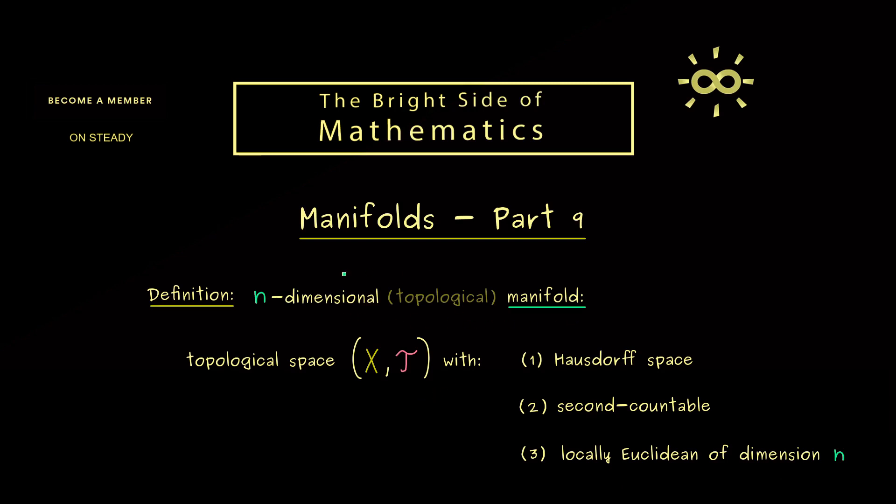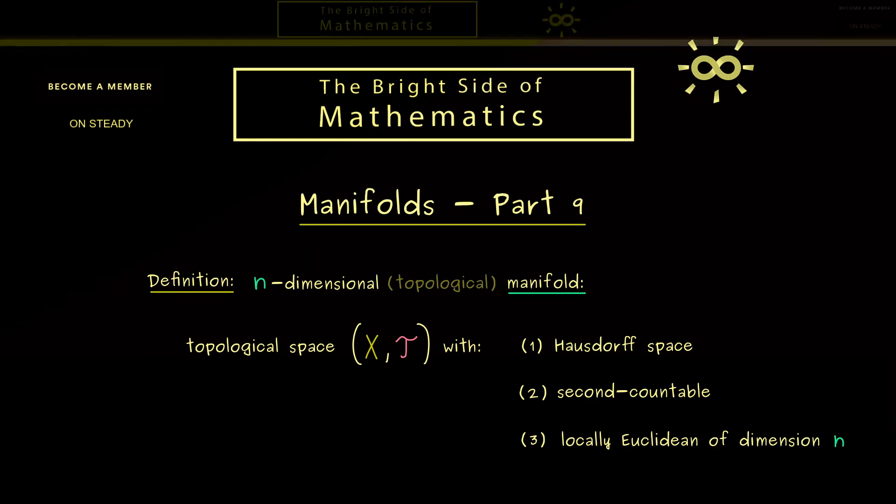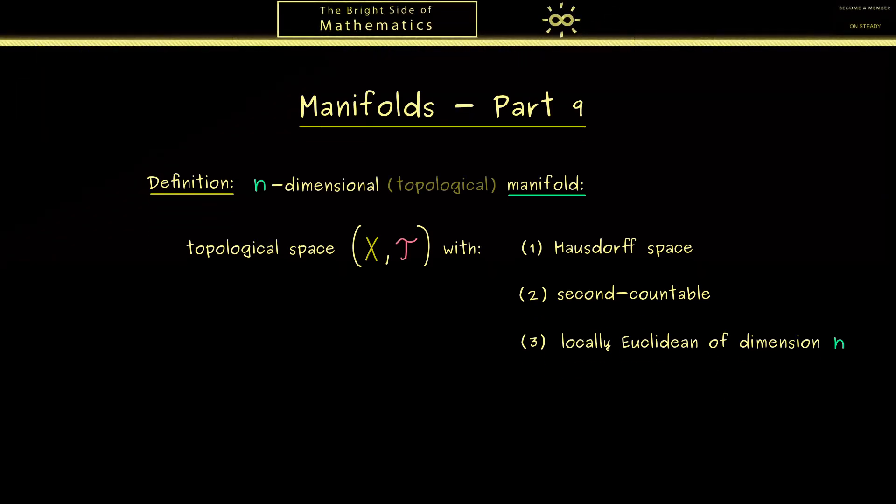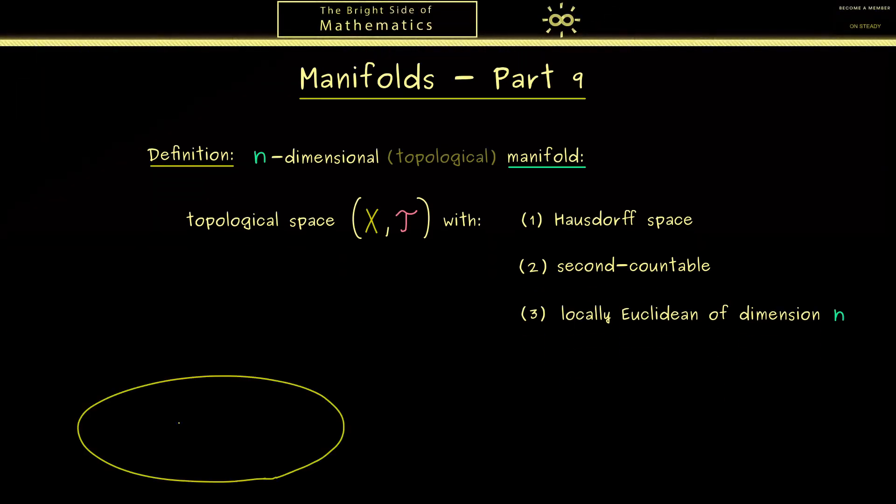Now you know the definition, and I would say let's talk about the term locally Euclidean. As I already told you, this should be the essential property of a manifold. Now a typical visualization for a manifold can look like this.